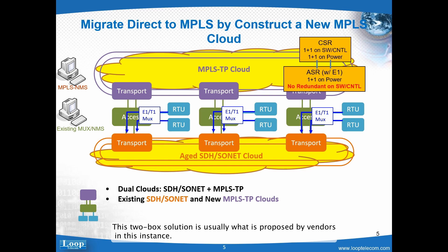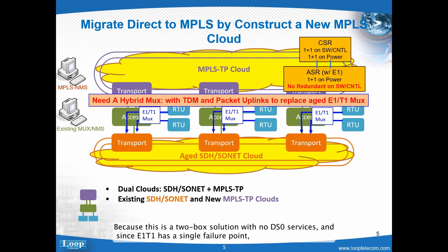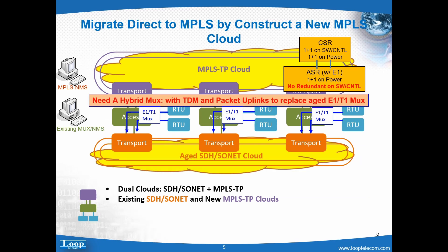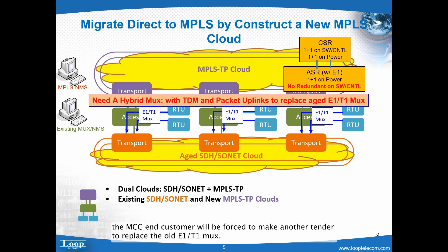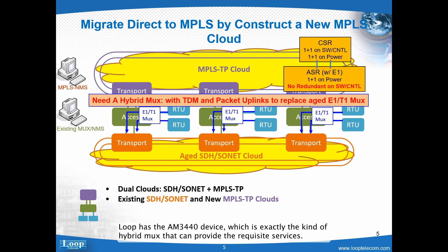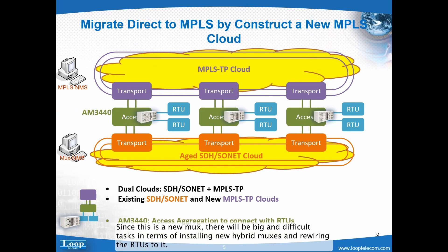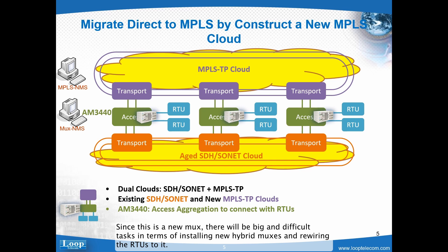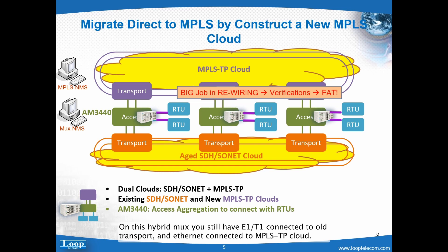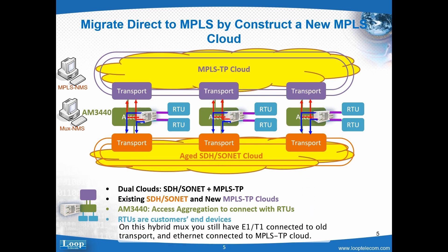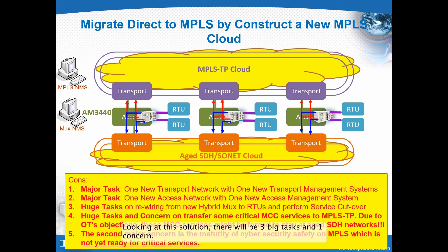This two-box solution is usually what is proposed by vendors. Because it is a two-box solution with no DS0 services and E1T1 has a single failure point, the MCC end customer will be forced to make another tender to replace the old E1T1 MUX. This calls for a hybrid or multi-service MUX which has E1T1 as well as Ethernet uplinks. Loop has the AM3440 device, which is exactly the kind of hybrid MUX that can provide the requisite services. Since this is a new MUX, there will be big and difficult tasks in installing new hybrid MUXs and rewiring their RTUs to it. On this hybrid MUX, you still have E1T1 connected to the old transport, and Ethernet connected to the MPLSTP cloud.